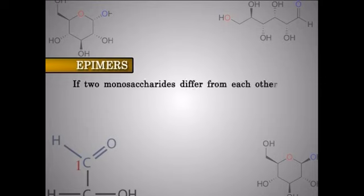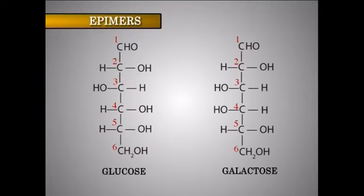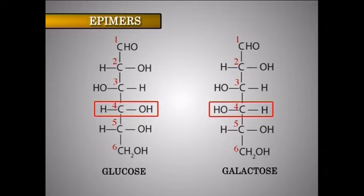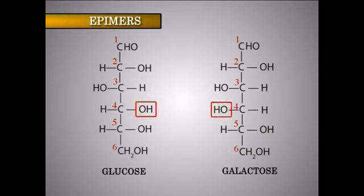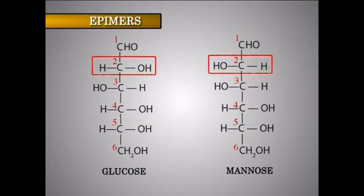If two monosaccharides differ from each other in their configuration around a single specific carbon atom, they are referred to as epimers of each other. For instance, glucose and galactose are epimers with regard to carbon-4, that is C4 epimers — they differ in the arrangement of the hydroxyl group at C4. Glucose and mannose are epimers with regard to carbon-2, that is C2 epimers.